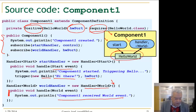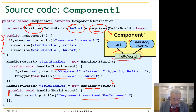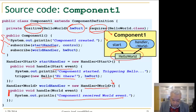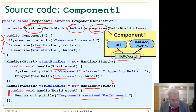Now we put everything together in the constructor of component 1. The constructor prints that the component has been created, subscribes the start handler to the control port — you don't need to explicitly declare the control port — and subscribes the world handler to the Hello World port.